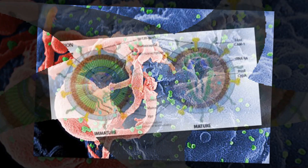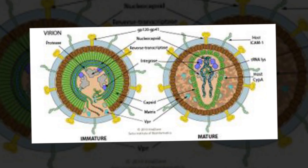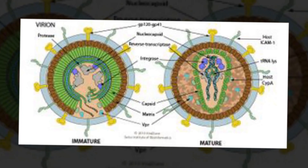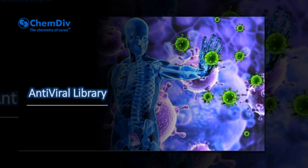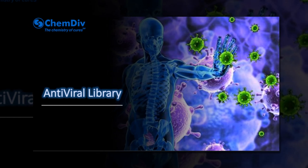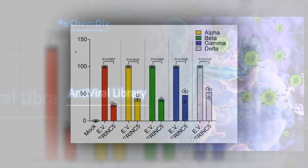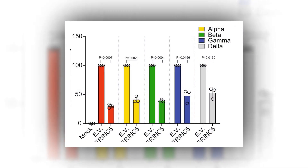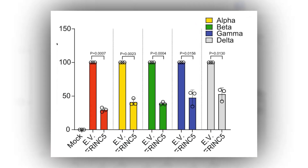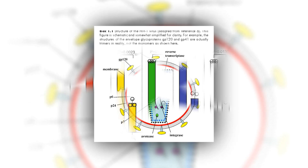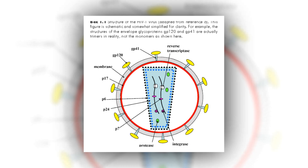SAMD9 and SAMD9L are paralogous genes separated by a duplication event, encoding large proteins involved in critical cellular processes such as cell division, protein translation, stress responses, apoptosis, and endosomal trafficking. Genetic variants of SAMD9 are linked to MIRAGE syndrome — myelodysplasia, infection, restriction of growth, adrenal hypoplasia, genital phenotypes, and enteropathy — while SAMD9L variants cause neurological and hematological disorders like ataxia-pancytopenia and SAMD9L-associated autoinflammatory disease.